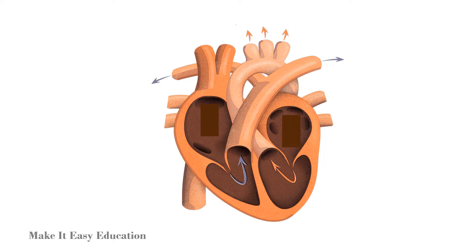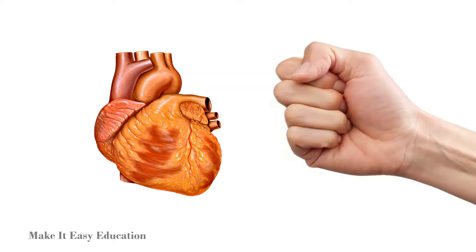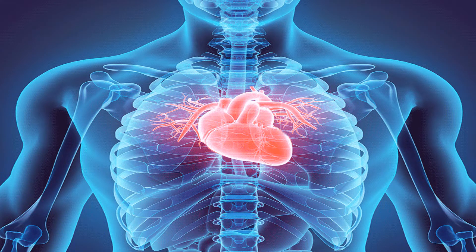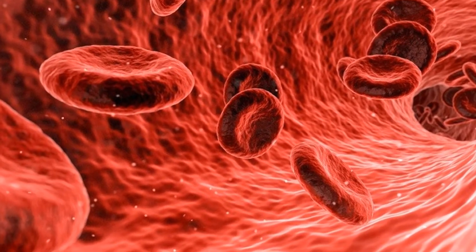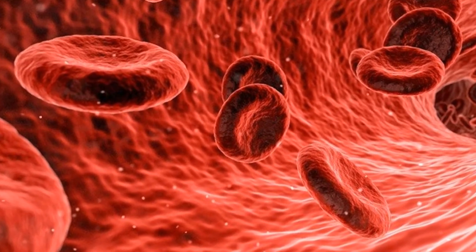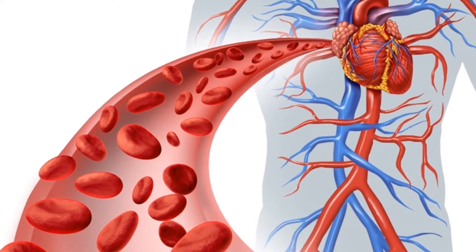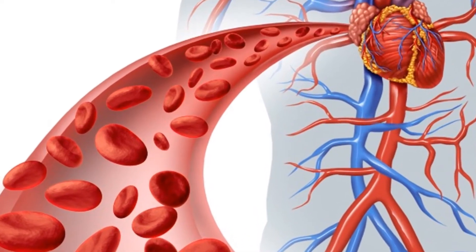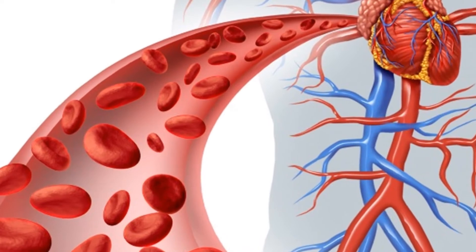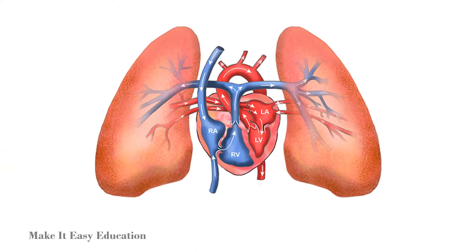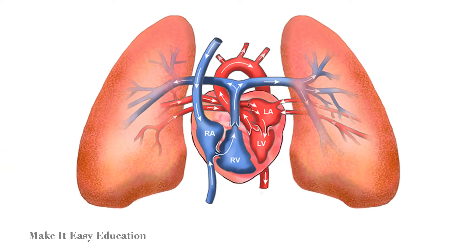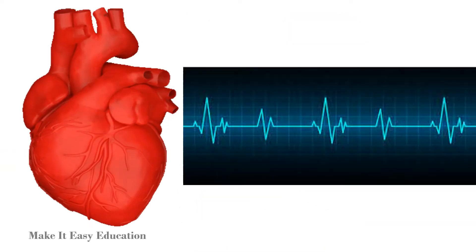The two upper chambers receive blood coming from the rest of the body, while the two lower chambers pump blood out of the heart. The adult human heart is about the size of our fist. The main function of the heart is to pump blood containing oxygen and nutrients to all cells in the body. It also receives blood containing carbon dioxide from all parts of the body and pumps it to the lungs for purification.